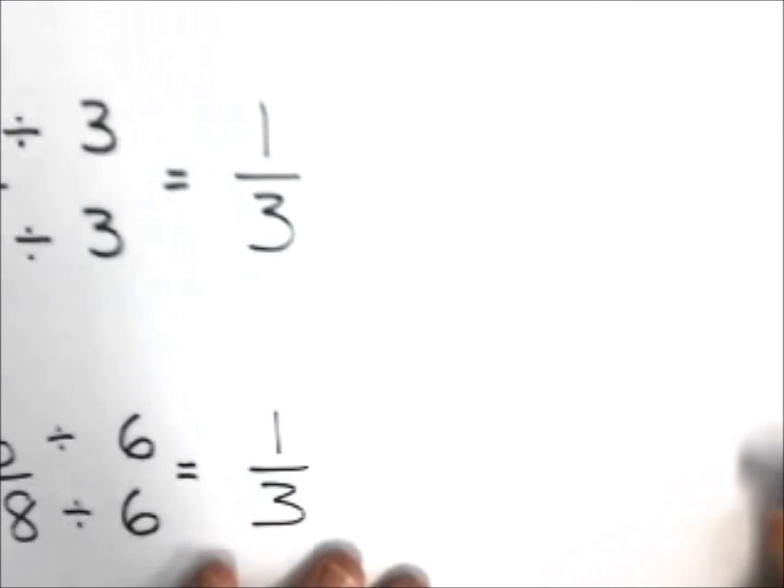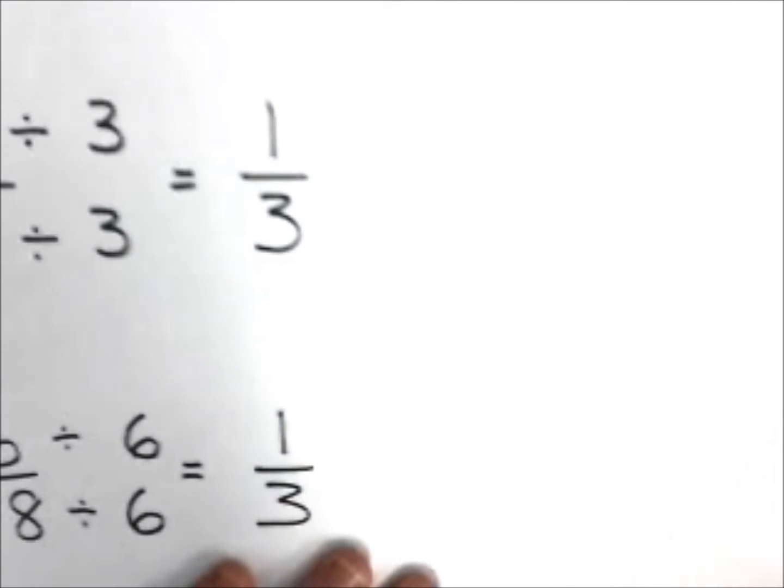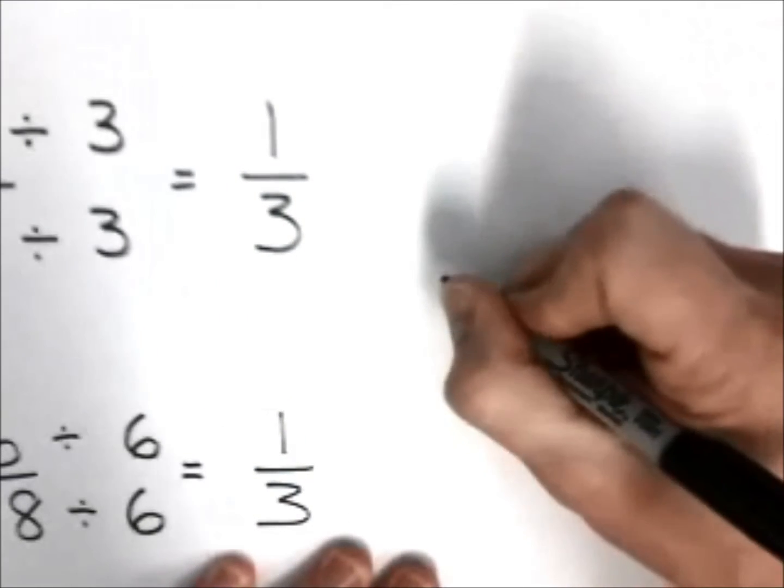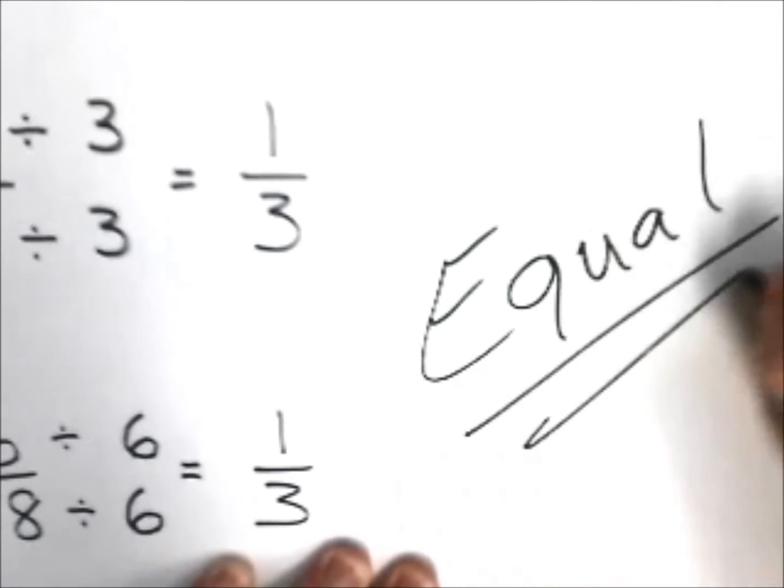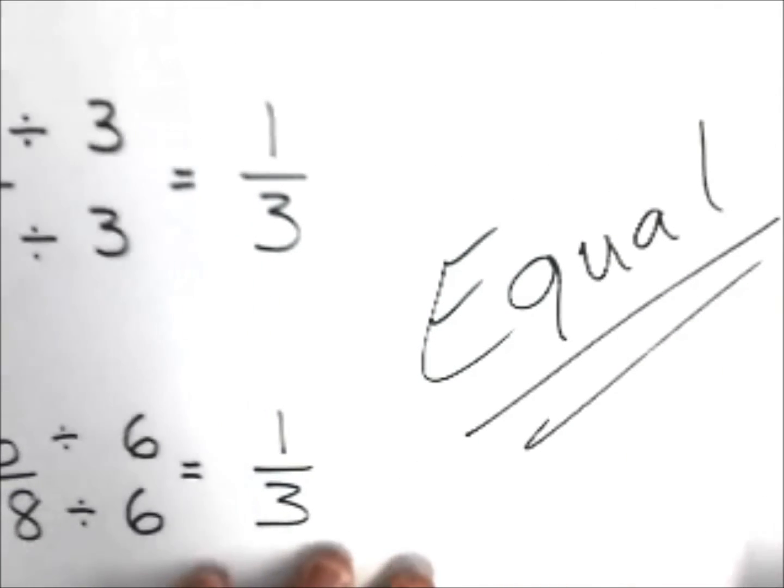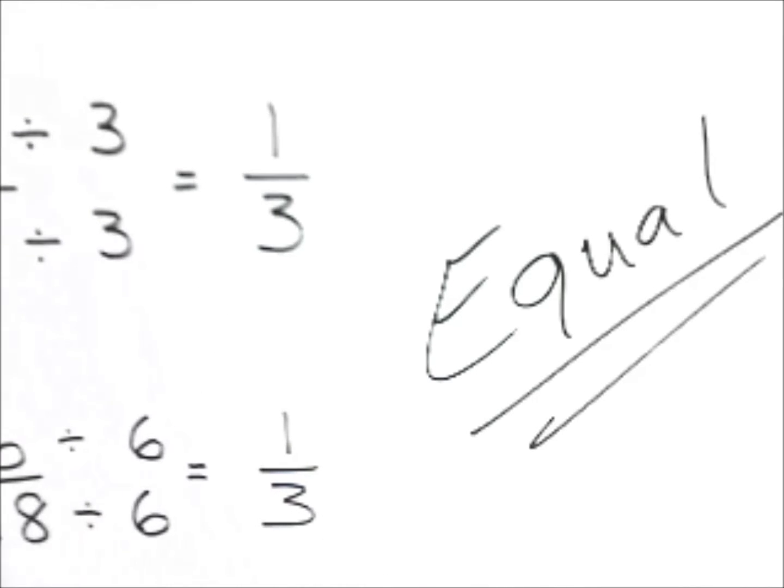They are all equivalent fractions because we did the same to the bottom as the top. And everybody knows that equivalent fractions are indeed equal. And that is how you make equivalent fractions, everyone.